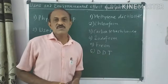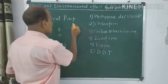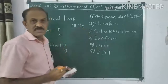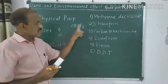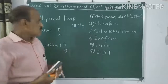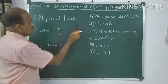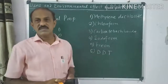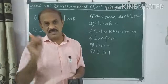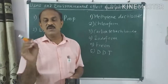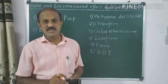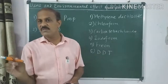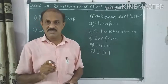The next polyhalogen compound is chloroform, which has the formula CHCl₃ — also called trichloromethane. Regarding its physical properties, chloroform is also a colorless liquid with a sweet smell, just like methylene dichloride.